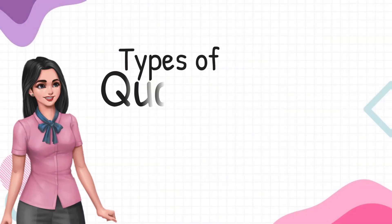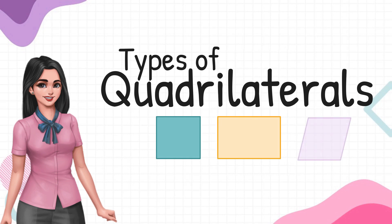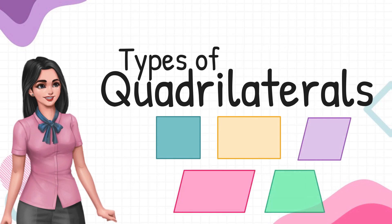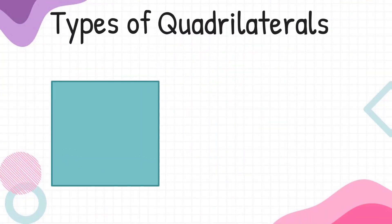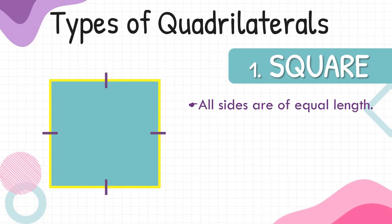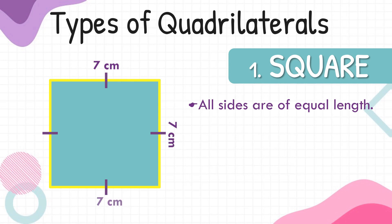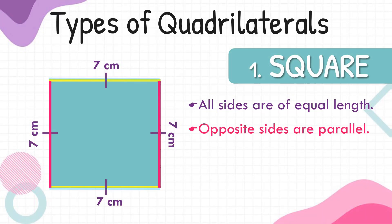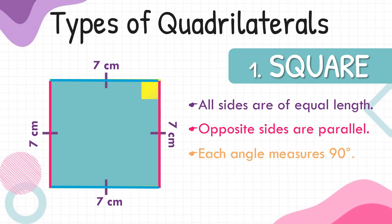Let's take a look at the different types of quadrilaterals. First up is a square. All sides of a square are of the same or equal length. If one side of a square measures 7 centimeters, then the other three sides also measure 7 centimeters. Opposite sides of a square are parallel. A square also has four right angles, each measuring exactly 90 degrees.